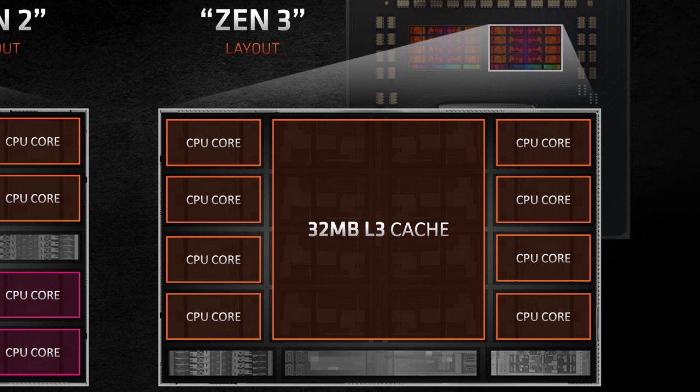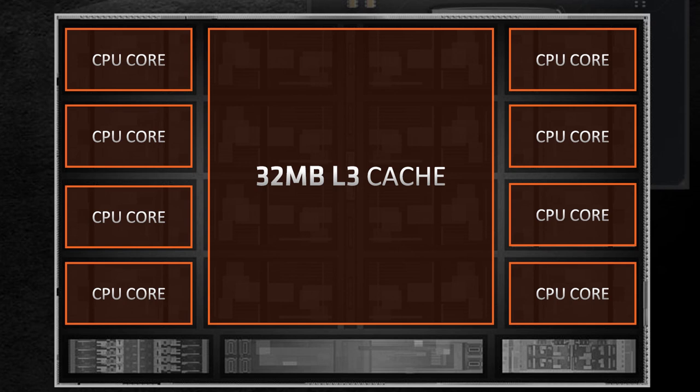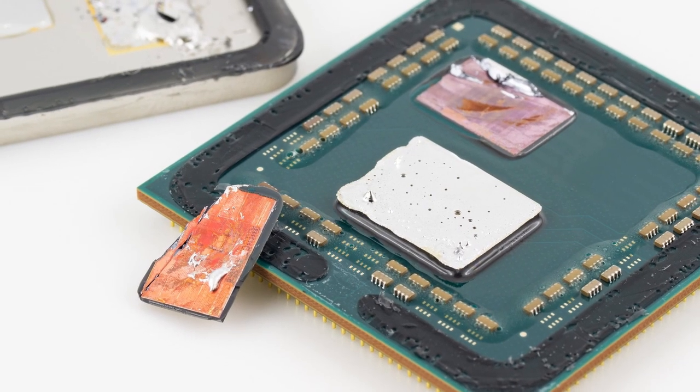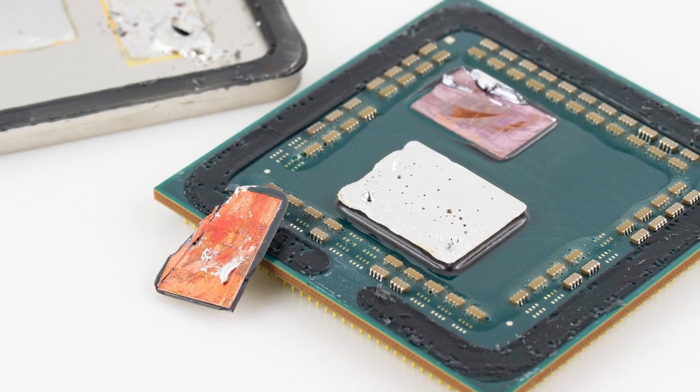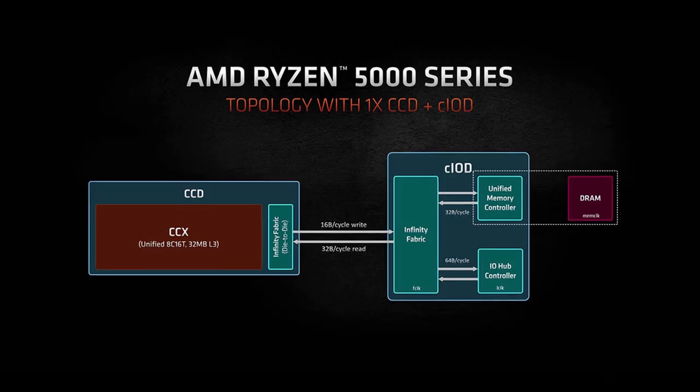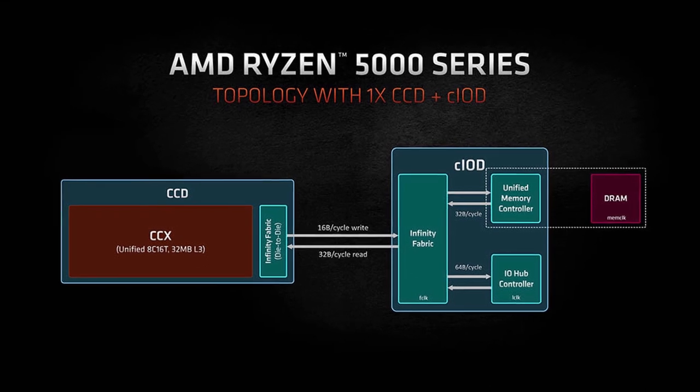CCX is short for core complex. The core complex consists of eight individual cores, each with their L1 and L2 cache. They also share a large 32 megabyte L3 cache. The Ryzen 5 5600X has one CCD with one CCX. That one CCX has six out of the eight cores enabled.